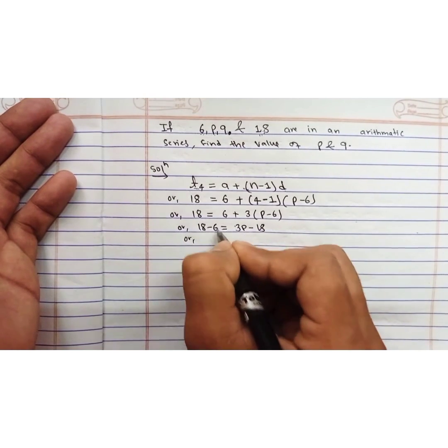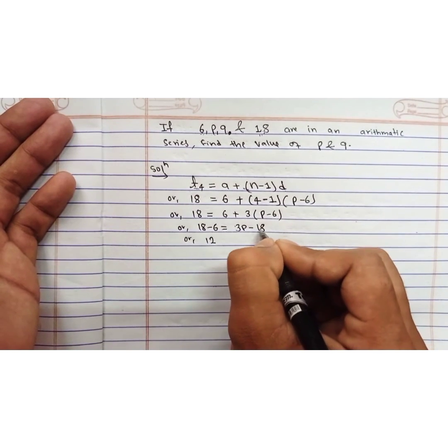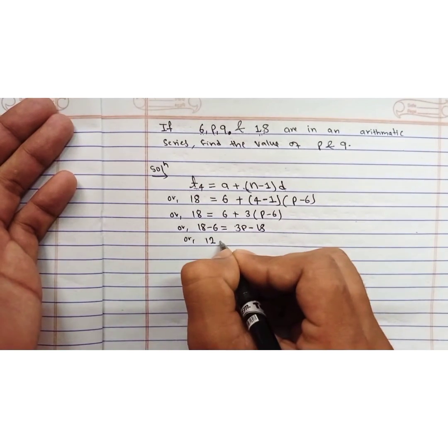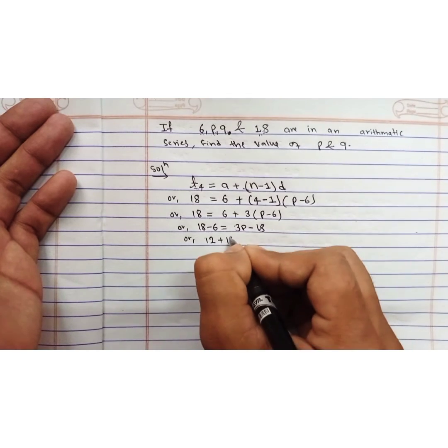Or 18 minus 6 is 12, and if this minus 18 is transposed to this side, then it becomes plus 18 equals 3p.